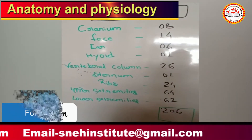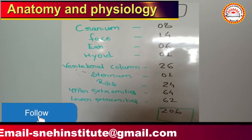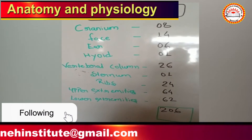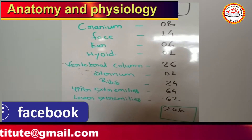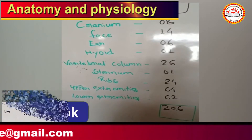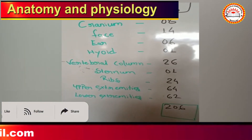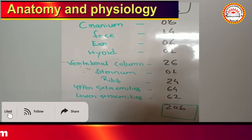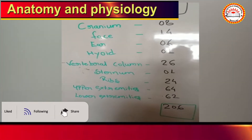The total number of bones is 206. Cranium has 8 bones, face has 14 bones, ear has 6 bones, hyoid has 1 bone, vertebral column has 26 bones, sternum 1 bone, ribs 24, upper extremities 64 bones, and lower extremities 62 bones.